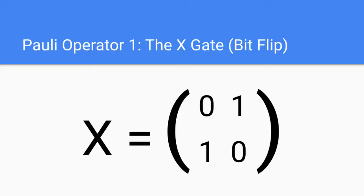So first, let's talk about the first Pauli operator, which is the X gate. As we can see, the X gate is a bit flip gate, as shown on the slide, and below we can see the matrix representation of the X gate. On top we have 0 and 1, and on the bottom we have 1 and 0, so it's a 2x2 matrix.